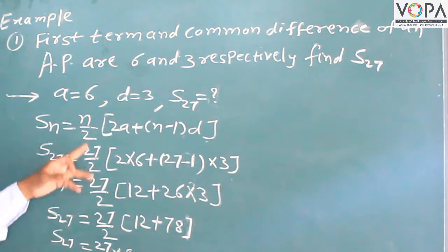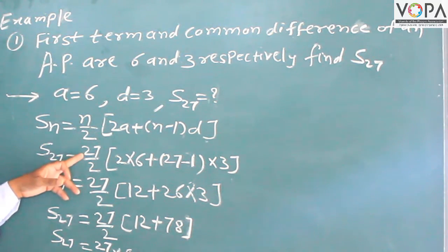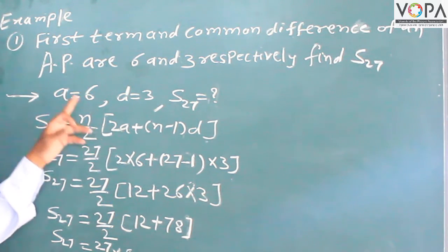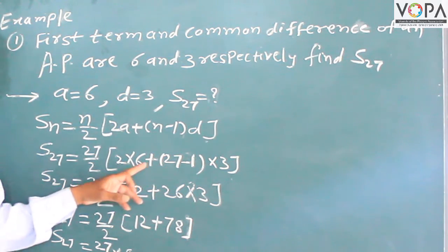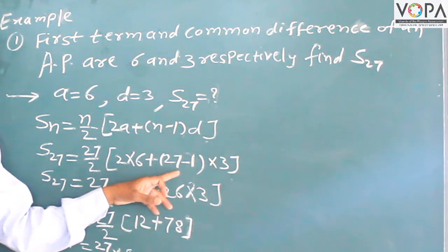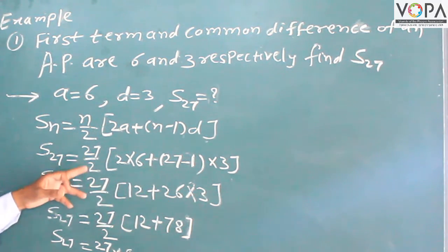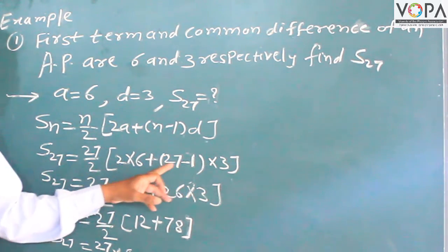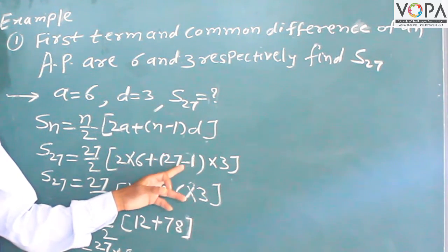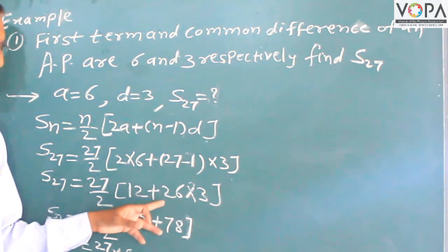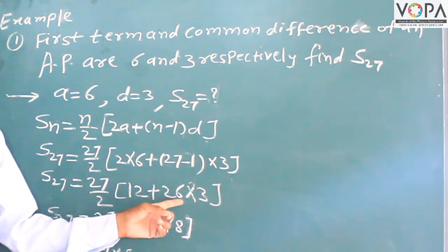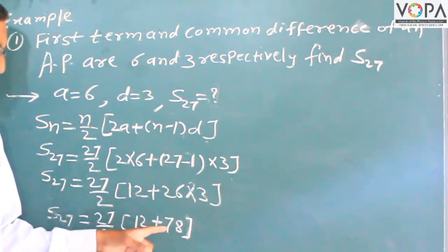So we have 27 divided by 2, multiplied by 2 times 6 plus 27 minus 1 multiplied by 3. That gives 27 divided by 2, then 2 times 6 is 12, plus 27 minus 1 which is 26, multiplied by 3. The multiplication 26 multiplied by 3 is equal to 78.